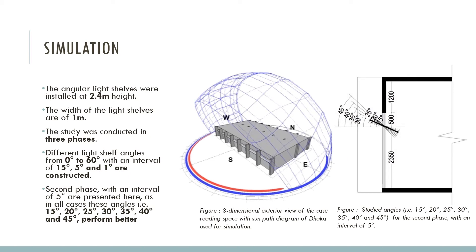A 3D model of the case space was built for the simulation. Angular light shelves were installed at 2.4 meters height in the south façade window of the reading space, with 1 meter width. The study was conducted in 3 different phases with light shelf angles from 0° to 60°, at intervals of 15°, 5°, and 1°, to specify the best angles with highest precision year-round. The detailed results for the second phase at 5° intervals are presented here. In all cases, angles of 15°, 20°, 25°, 30°, 35°, 40°, and 45° performed best among all studied simulations and governed the decision support process.